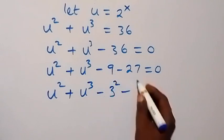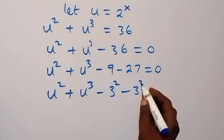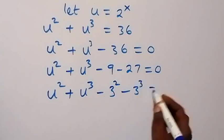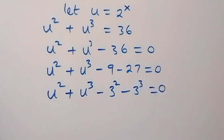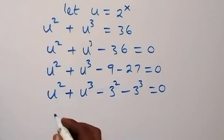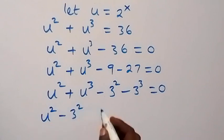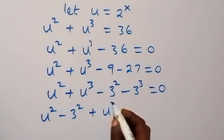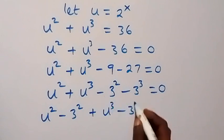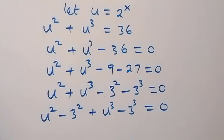Let's rewrite this as u raised to power 3 minus 3 cubed, and here we write minus 9 as minus 3 squared. Then bringing the powers together, we have u squared minus 3 squared plus u cubed minus 3 cubed equals 0.